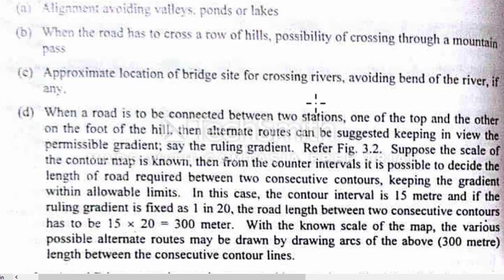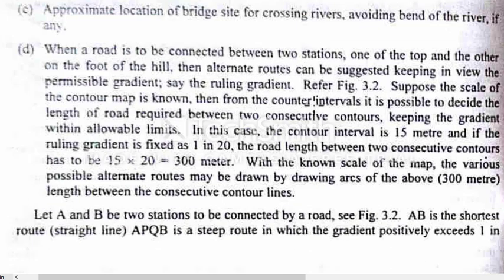Third, the approximate location of a bridge site for crossing rivers, avoiding any bend of the river. We should avoid bridge construction on highway alignment at a place of river bend. Next, when a road is to be connected between two stations — one at the top and the other at the foot of a hill — alternate roads can be suggested keeping in view the permissible gradient.